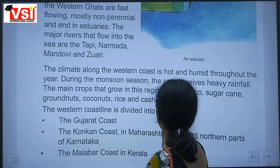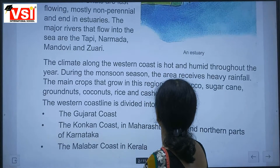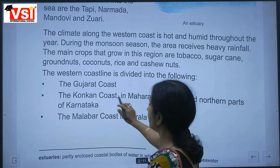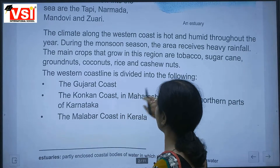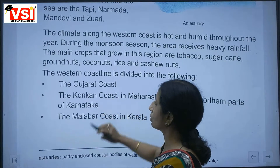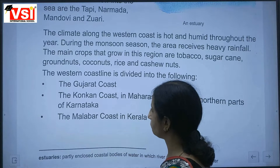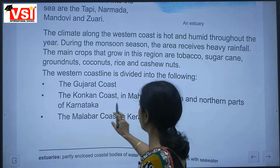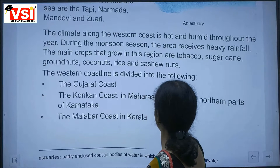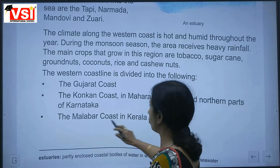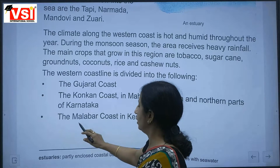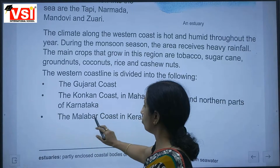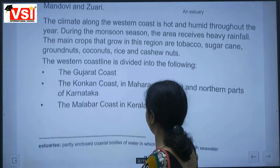The western coastline is divided into the following sections: the Gujarat coast, the Konkan coast in Maharashtra, Goa and the northern parts of Karnataka, and the Malabar coast.